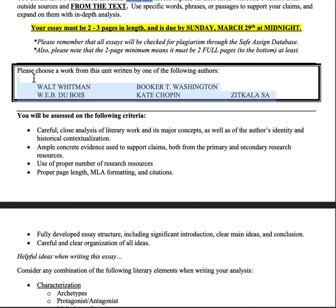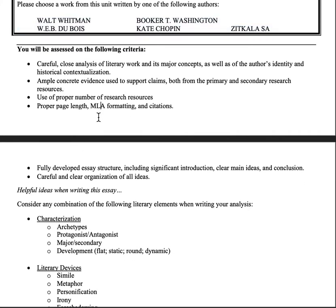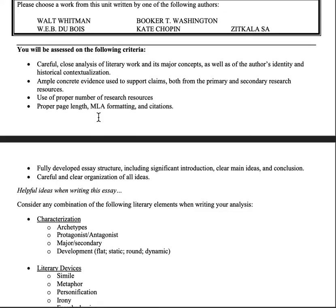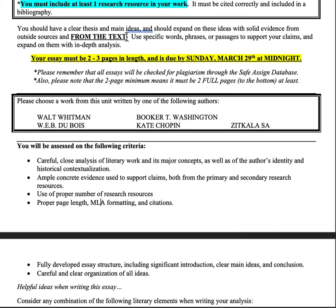You have a number of choices here: Whitman, Du Bois, Washington, Chopin, and Zitkala-Ša to choose from. Make sure that you have good close analysis of the literary work — again, that's the most important aspect — and its major concepts. Secondarily, you might look at the author's identity or the historical context. Just like I do in the lectures, primary emphasis should be on analyzing the piece of literature.